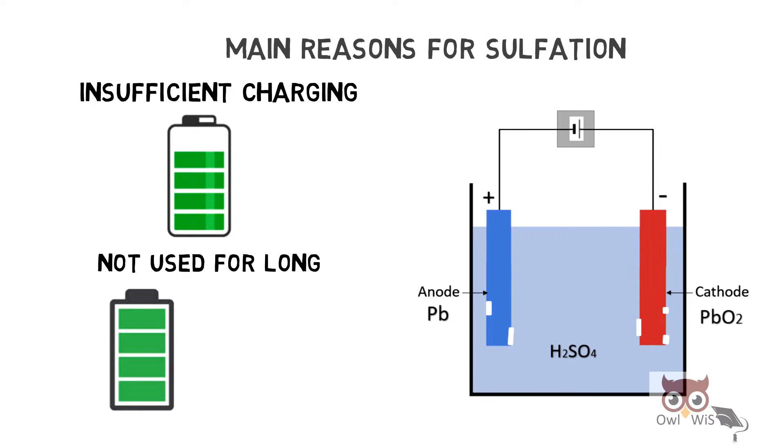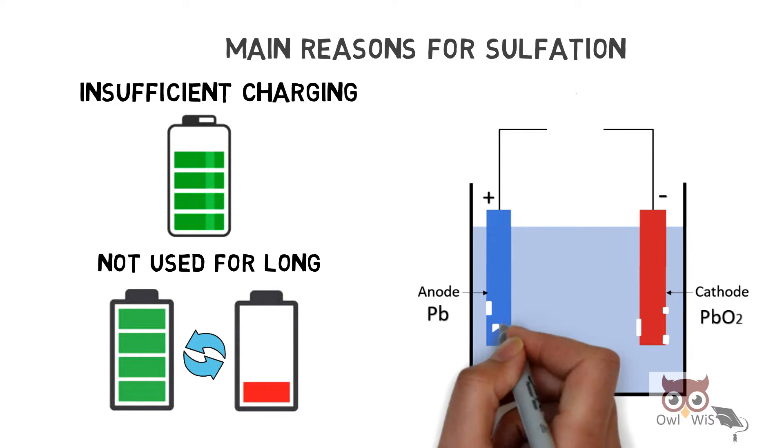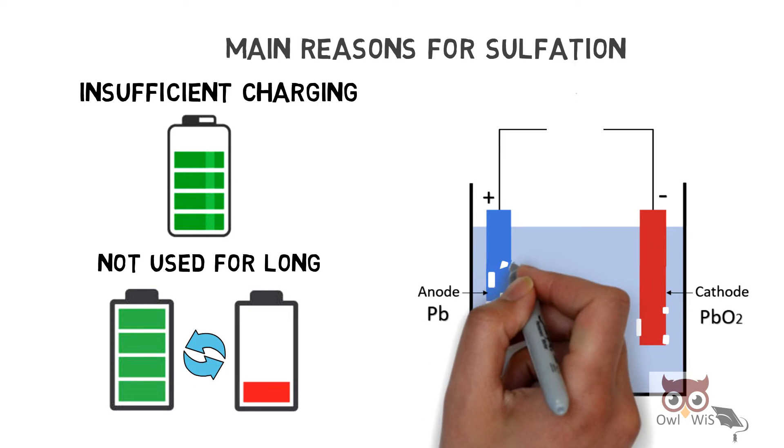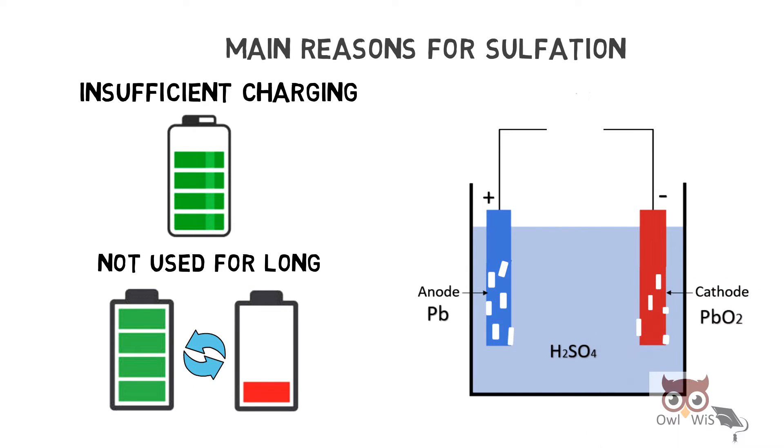Next, if not used for long time, if a battery is kept unused and the charge discharge cycle is not done for a long time, then again the lead sulfate deposit on the electrodes increase.